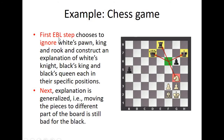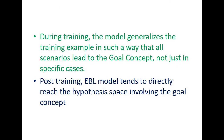For example, in the chess game, the first EBL step chooses to ignore white's pawn, king, and rook, and constructs an explanation involving white's knight, black's king, and black's queen each in their specific positions. Next, the explanation is generalized — moving the pieces to different parts of the board is still bad for black. During training, the model generalizes the training example such that all scenarios lead to the goal concept, not just in specific cases.